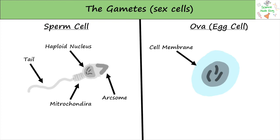The egg cell has a cell membrane that can change structure, so that once the sperm has fertilized it, it hardens so that no more sperm can break through the membrane. It also needs lots of nutrients in the cytoplasm to help feed the newly formed zygote. Like the sperm cell, it also has a haploid nucleus.